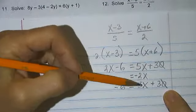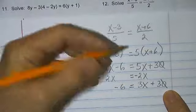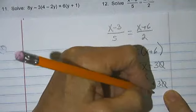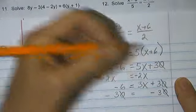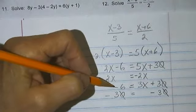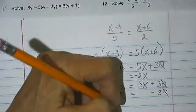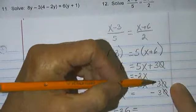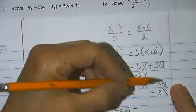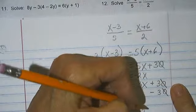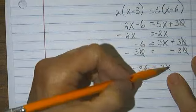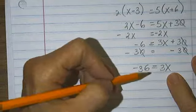I want x all by itself, so now I subtract 30 from each side. Negative 6 minus 30 is negative 36, is equal to 3x plus 30 minus 30 is 0, leaving 3x. So now I can divide both sides. This is multiply, so I divide both sides by 3.